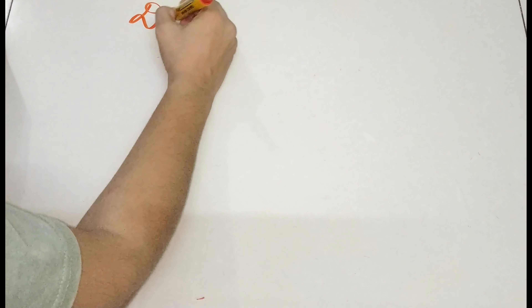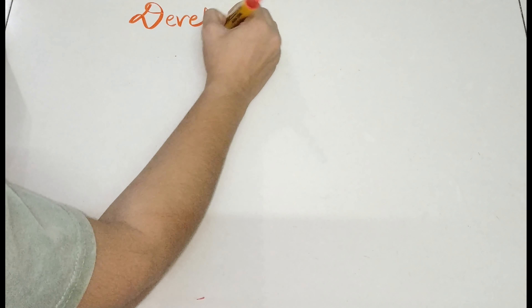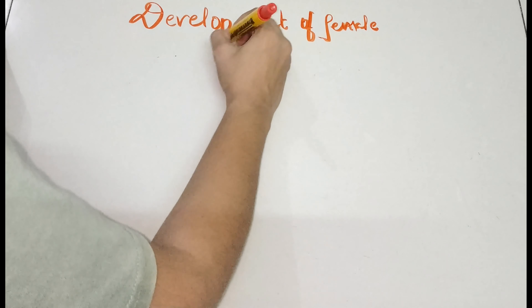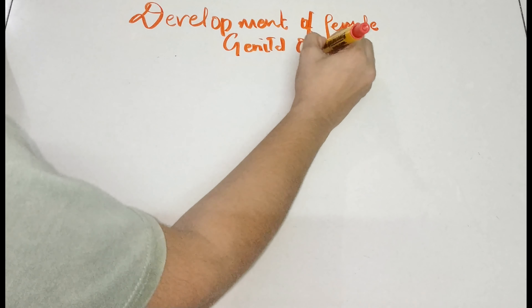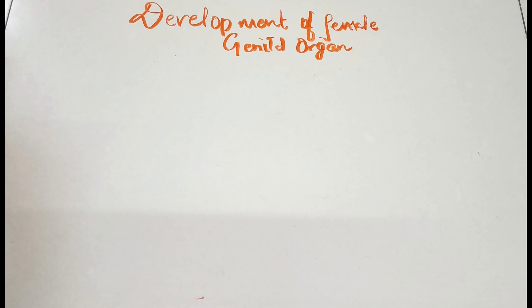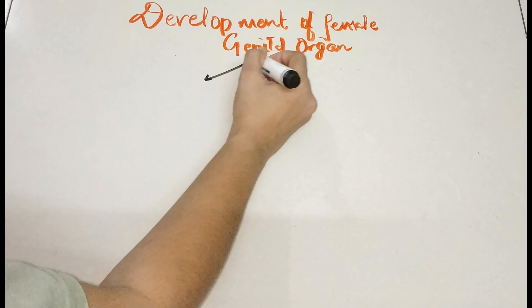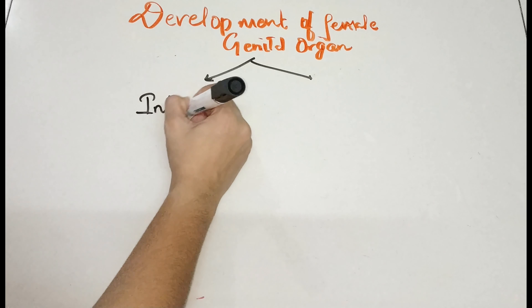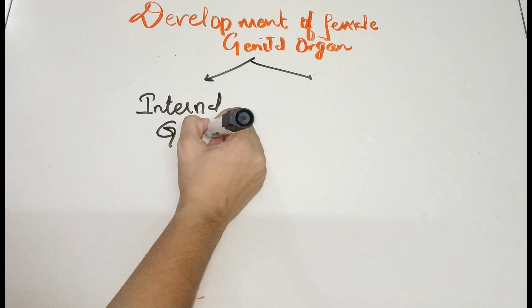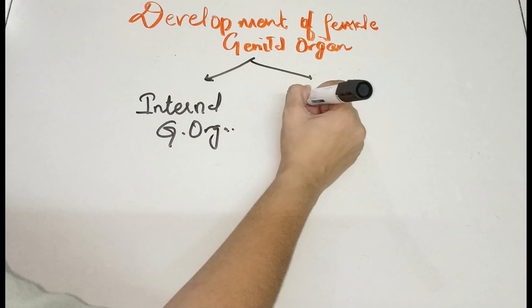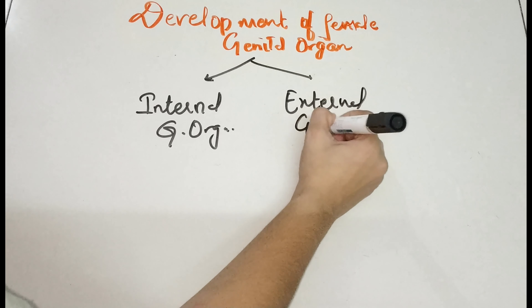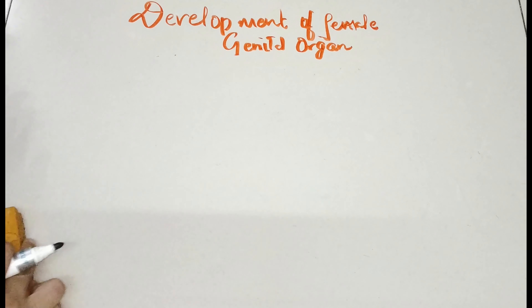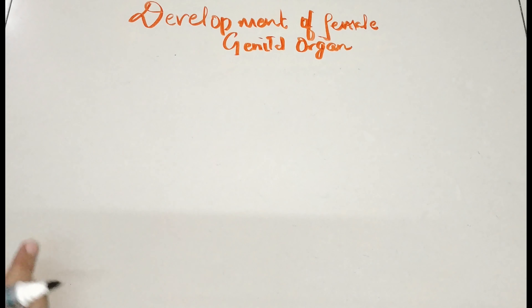Today we are back again with the topic of development of female genital organs. We will see how these female genital organs form. There are two sides of genital organs in females: internal genital organs and external genital organs. We will see one by one how they get developed during embryology and how they become fully developed.